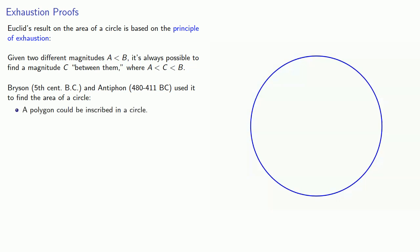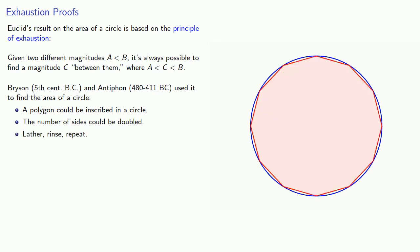This idea goes back to Bryson and Antiphon, who used it to find the area of a circle. A polygon could be inscribed in a circle. The number of sides could be doubled. And lather, rinse, repeat. So the inscribed polygon always has an area less than the circle, but doubling the number of sides produces a polygon with a larger area that's still less.